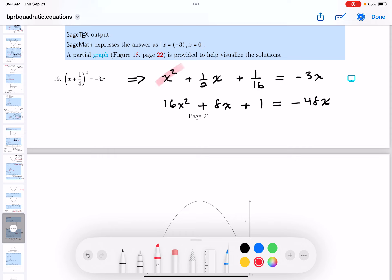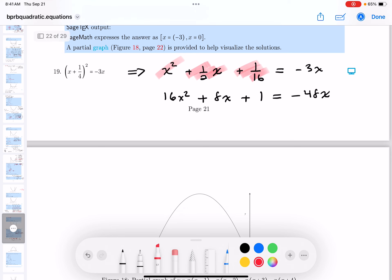Squaring x squared, 1 quarter plus 1 quarter is 2 quarters, which is 1 half. And 1 quarter times 1 quarter is 1/16. We get minus 3x. If you multiply by 16, you get 16x squared. 1 half times 16 is 8. 1/16 times 16 is 1. And 16 times minus 3 is minus 48. Things are going okay.